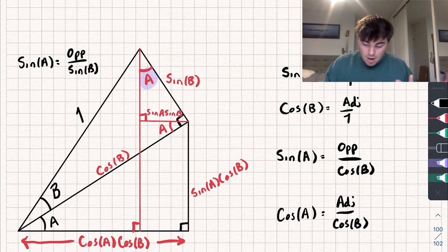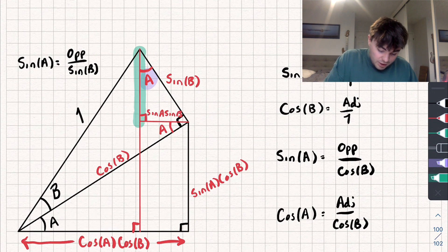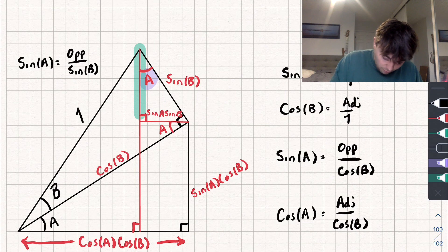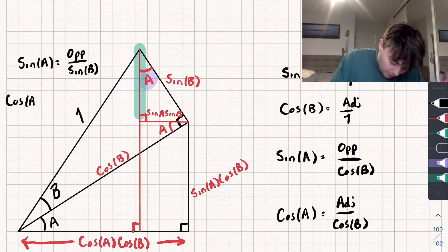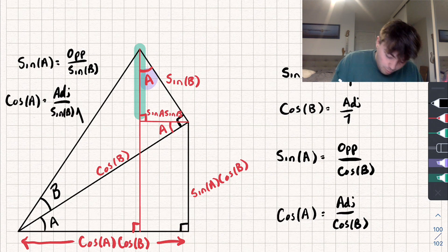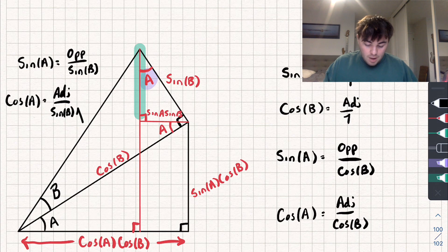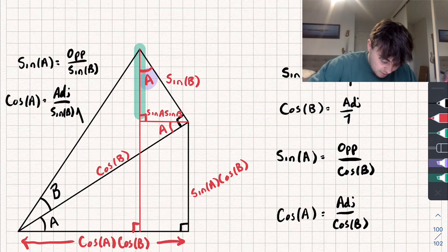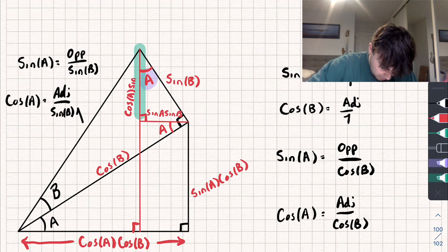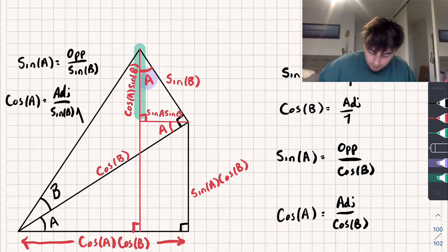And to find the adjacent side, we could say that cosine of the angle A is equal to the adjacent side, which is the one highlighted, divided by the hypotenuse, which is sine of B. So that is equal to cosine of A multiplied by sine of B.